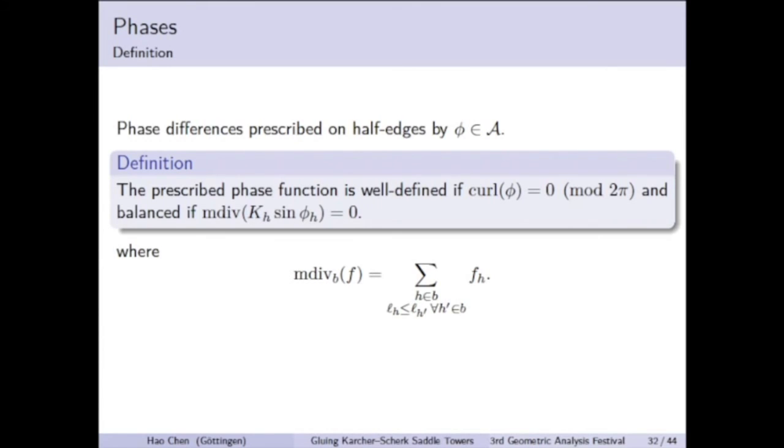The vertical balance is, however, defined using a strange operator mdiv. This is similar to the divergence, but the summation is only over the shortest edges in a cut.